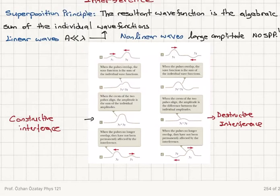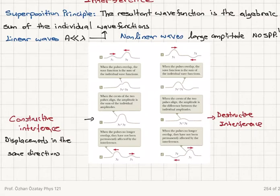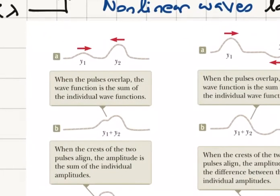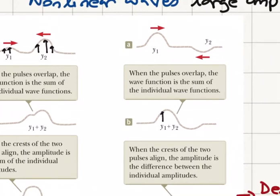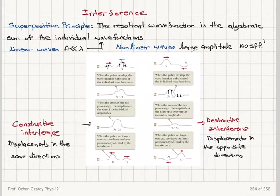When the displacements caused by the waves or pulses are in the same direction, they add up to produce a larger amplitude — that gives constructive interference. When the displacements are in opposite directions, we have destructive interference. By displacements, we mean displacements of the elements of the string: in constructive interference the displacements are in the same direction, and in destructive interference they are in opposite directions.